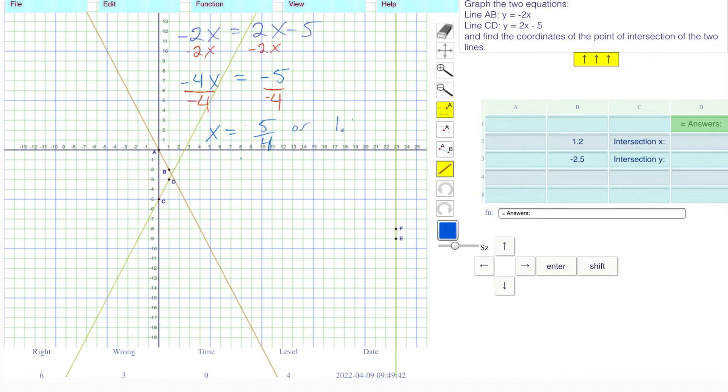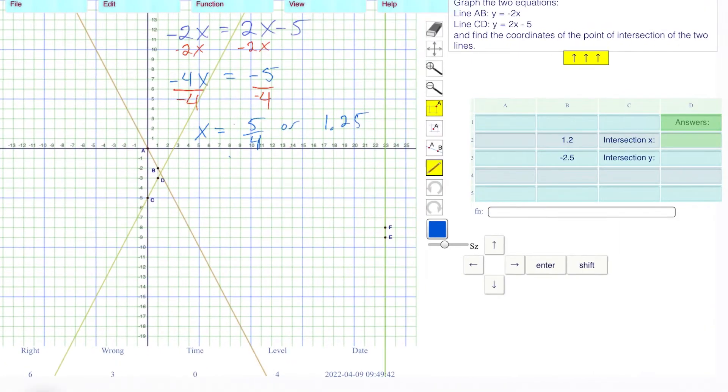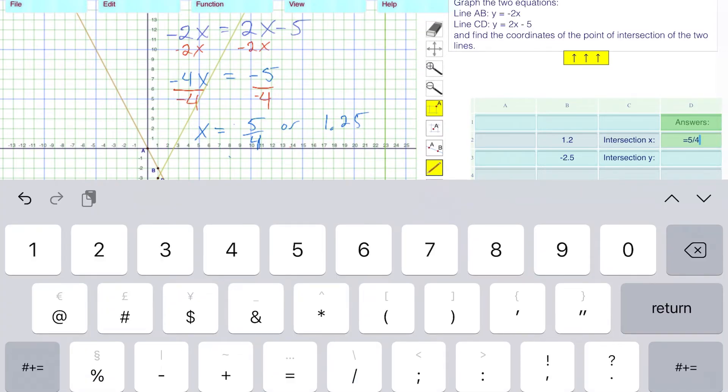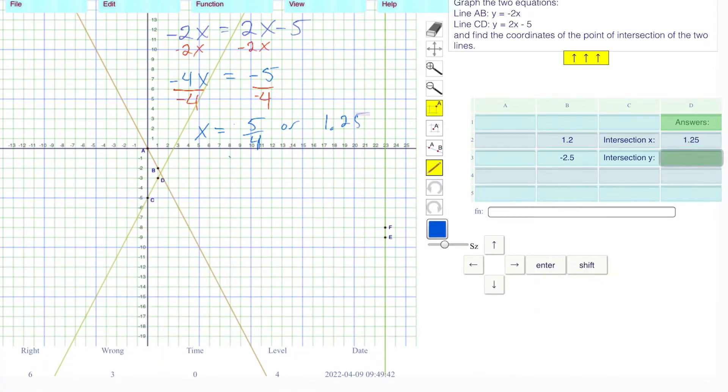Either one should be fine. 5, 1.25. I'm going to put in is equal to 5 over 4. It's equal to 5 over 4, but the computer is going to turn it into 1.25.